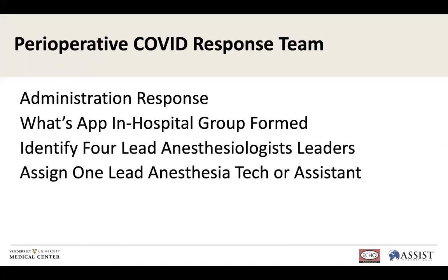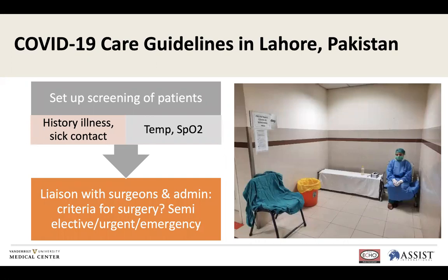Initially we could not get the administration on board. Around the 13th of March, we started telling them COVID was a possibility and we needed to change our current practices — they really did not get it. So within our department, we started a WhatsApp group called the COVID-19 leadership group, with four lead anesthesiologists and one lead anesthesia technician. The main responsibility of that team was to establish our own perioperative guidelines and training, and to continuously revisit them.